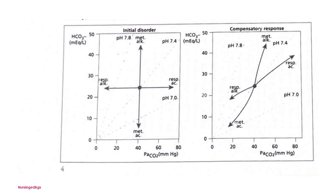In this graph, the PaCO2 should be between 35 to 45, and the bicarb somewhere between 22 to 26. The pH ranges from 7.0 to 7.8, with 7.4 at center. The normal range falls within a defined zone on the graph, and you'll also be able to view the compensatory response illustrated here.